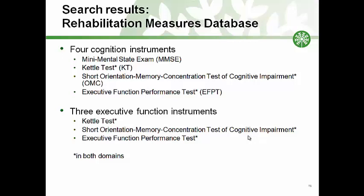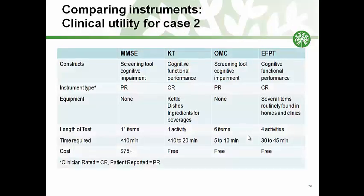In our search for tests, we selected cognition for area of assessment, geriatrics for diagnosis, and no preference for length or cost. Our search resulted in four cognition instruments and three executive function instruments. The four cognition instruments included the Mini Mental Status Exam, the Kettle Test, the Short Orientation Memory Concentration Test of Cognitive Impairment, and the Executive Function Performance Test. We eliminated the Mini Mental Status Exam and the OMC because they are screening tools and may not provide the depth of information required to understand the amount of assistance needed or to discriminate current cognitive status, and would not provide a method to measure change over time. This narrows the list to the Kettle Test and the Executive Function Performance Test.